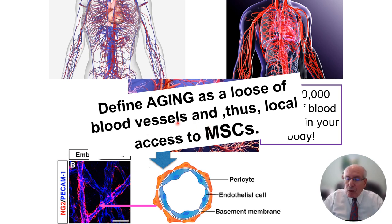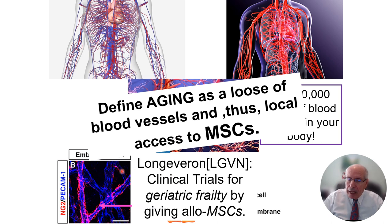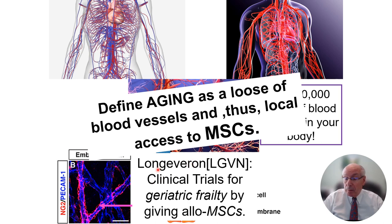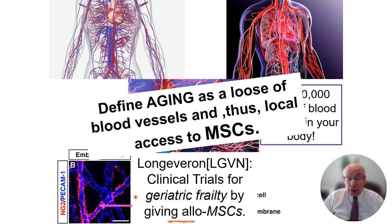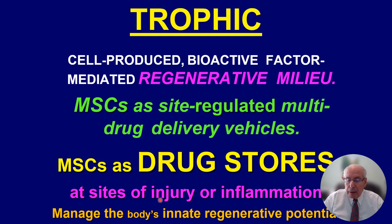Old guys like me need a booster shot every so often. There's a company called Longeveron doing phase two and phase three clinical trials for geriatric frailty, using marrow-derived, culture-expanded, allogeneic MSCs. Go to their website — they're a publicly traded company — and look at their phase two clinical trial data. Spectacular. Aging, blood vessel loss, and MSC function are clearly documented by these trials.